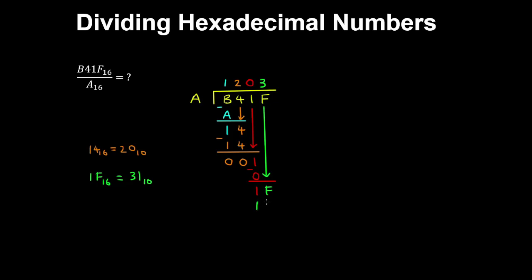So 30 in hexadecimal is 1E, or 16 plus 14. And then subtracting the result, we get 15 minus 14, which is 1. So we have 1203 remainder 1 in base 16.